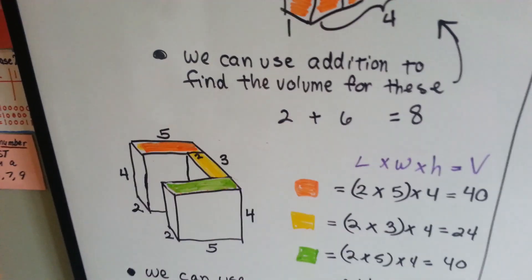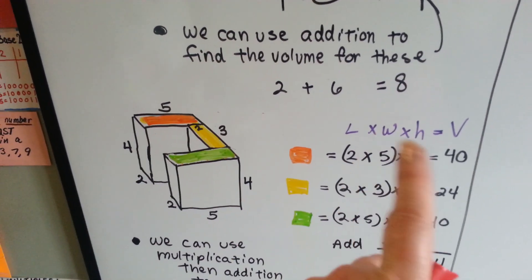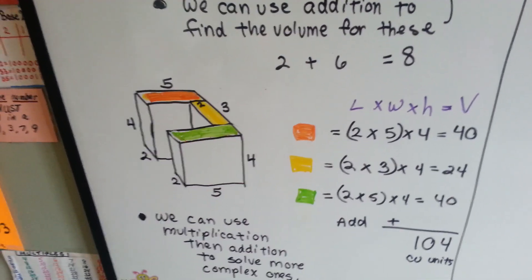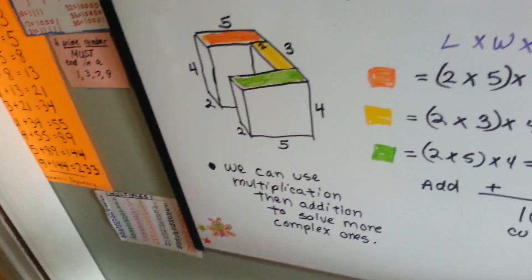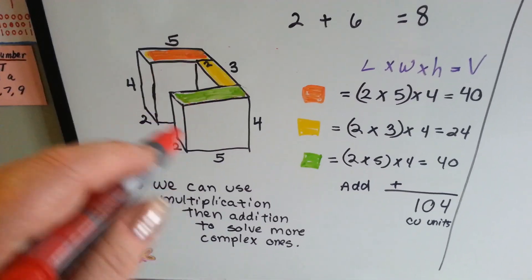When there's a more complex figure like this one, we use the volume formula. Length times width times height. And we can use multiplication, then addition, to solve these complex ones.